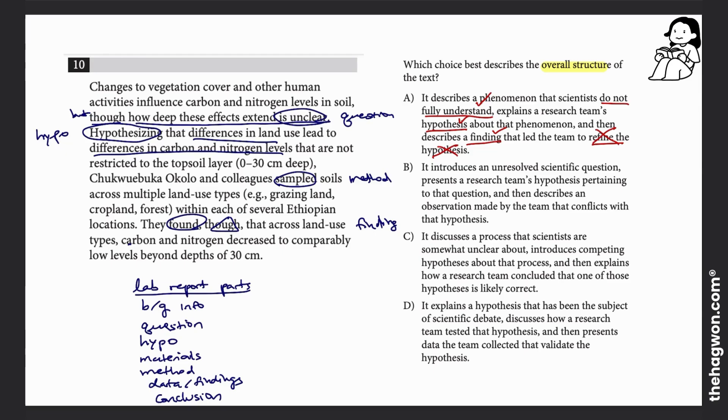Answer choice B says that we introduce a question—I like that, we saw that—and then we presented a hypothesis—great, we saw that—and then we describe an observation, and observation is another word for finding, so I like that. But it says that the observation conflicts with that hypothesis. I didn't read that observation super in depth, so I'm going to come back to this. I'm going to go to C and D first and see if I can eliminate more answer choices.